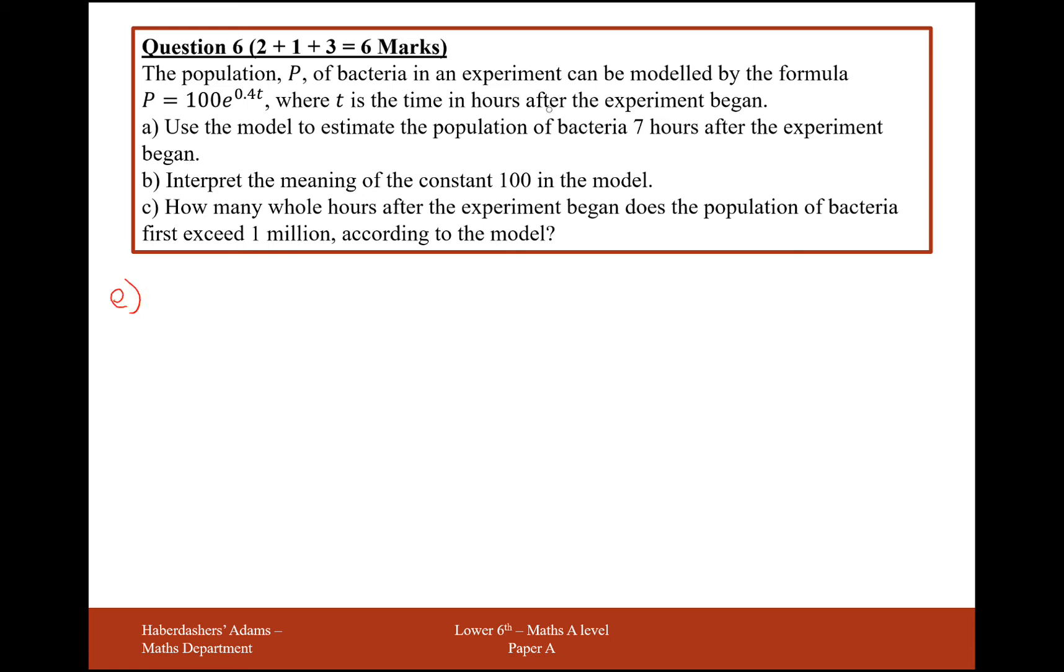Well, T here is representing the time. We have T as 7 hours, so I'm just going to use my formula and plug in the value T equals 7. So P equals 100E to the 0.4 times 7, and doing this completely on my calculator, I'm going to get 1,644 bacteria.